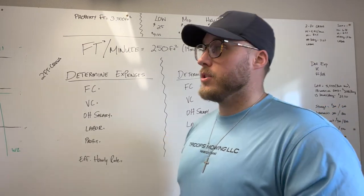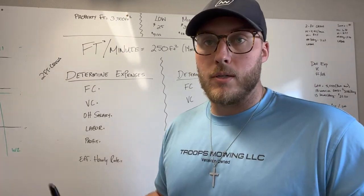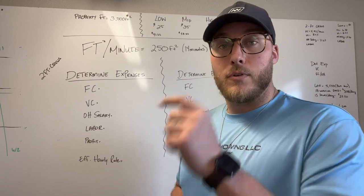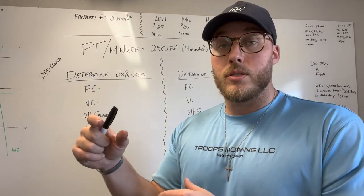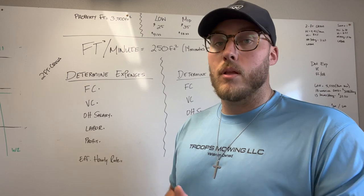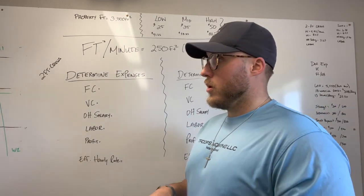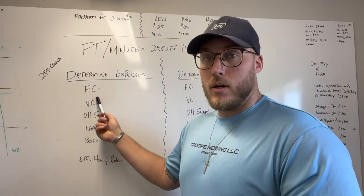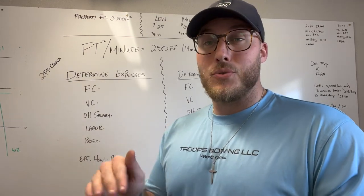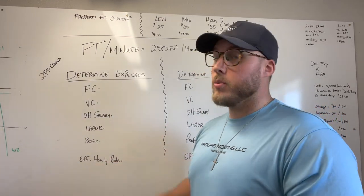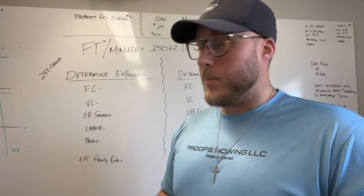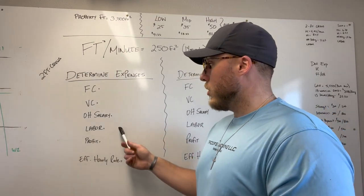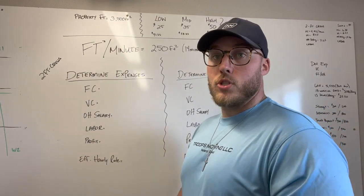First, you want to determine your expenses before you can even figure out your pricing. The basis of business is revenue minus expenses equals profit. If you don't know your expenses, you're probably not going to be able to determine your revenue and definitely won't be able to determine your profit. The different types of expenses within a lawn mowing service are your fixed costs - meaning whether you're on a property or not, that stays the same - your variable costs, which only change if you're on a property, the salary you want to pay yourself as overhead, and the labor associated with completing the job.